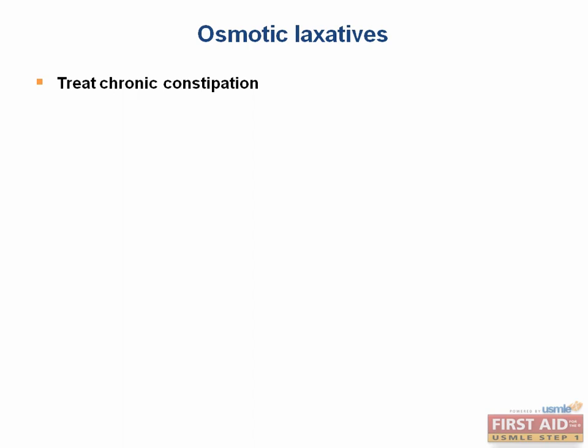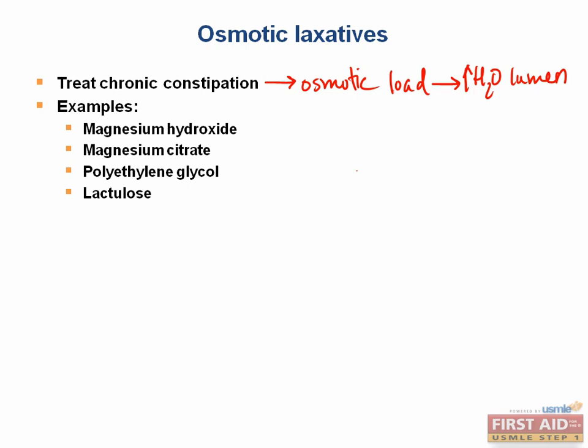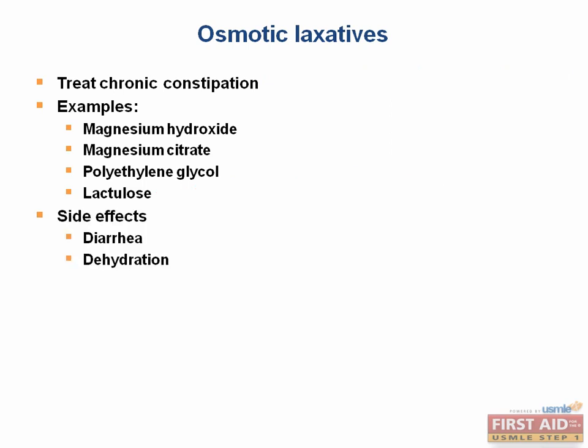Another commonly used class of drugs in treatment of chronic constipation are the osmotic laxatives. They exert their function by creating an osmotic load in the gut lumen to draw water out. Notable examples include magnesium hydroxide, magnesium citrate, polyethylene glycol, and lactulose. Lactulose is particularly important since it can be used to treat hepatic encephalopathy, since gut flora degrades it into metabolites that promote nitrogen excretion as ammonium ions. Side effects most notably include diarrhea and dehydration, and in those that abuse these drugs, harmful electrolyte abnormalities can result.